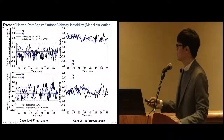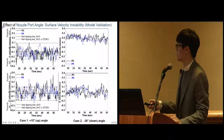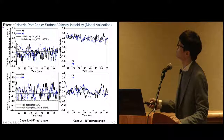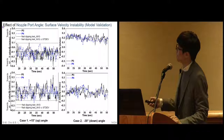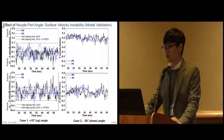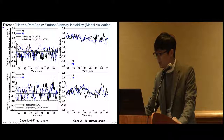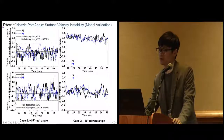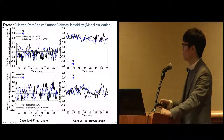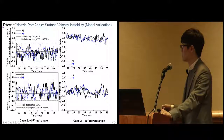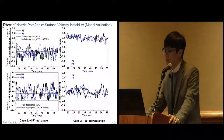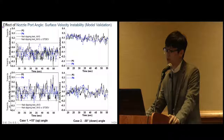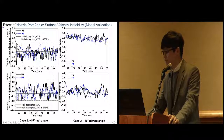The black line shows the plant measurement and the dashed black line shows the LES prediction result — those are well matched with the measurement. We also found that with the upward angle nozzle port, more surface velocity fluctuation occurs at the surface than with the downward angle nozzle port case. This is caused by the jet wobbling phenomena in the mold shown in the previous slide.